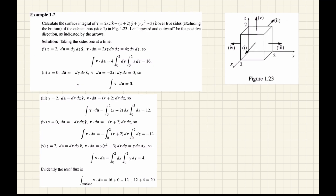Now we move on to one example. The question is to calculate the surface integral of a vector function over the five sides of a cubical box. The surface is specified as a cubical box with six sides. By convention, upward and outward will be the positive direction, and the downward direction will be the negative direction.